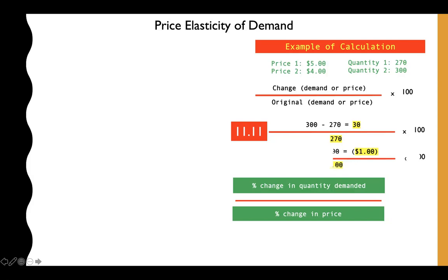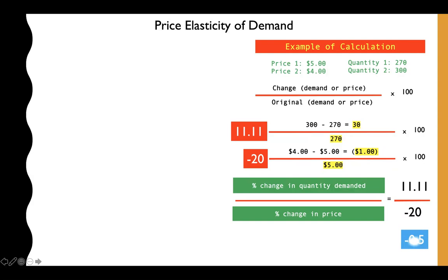For price: the new price of four dollars minus the original five dollars, divided by five dollars, gives negative 20%. Putting them together in the calculation: 11.11 divided by negative 20 gives a result of negative 0.5.